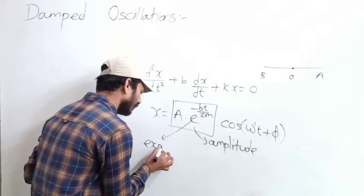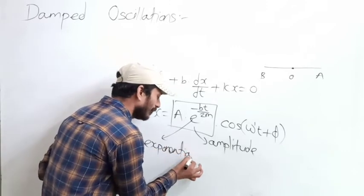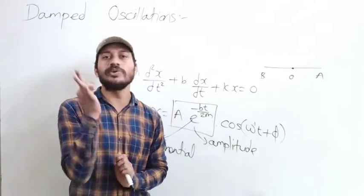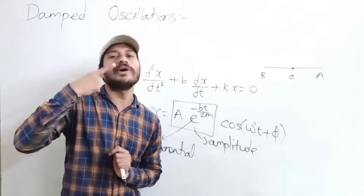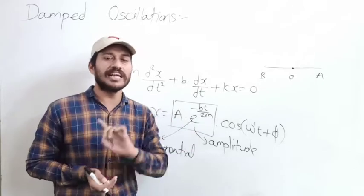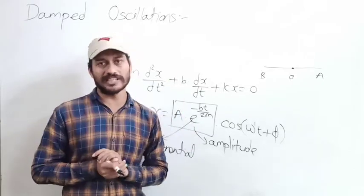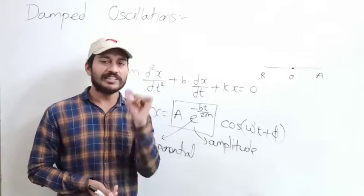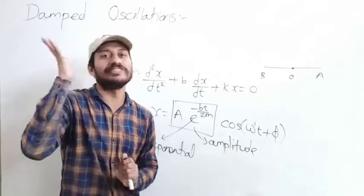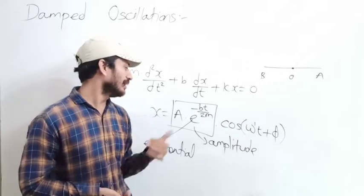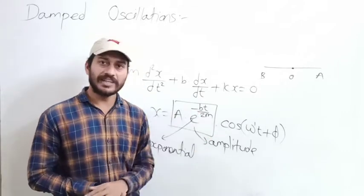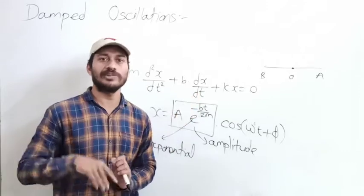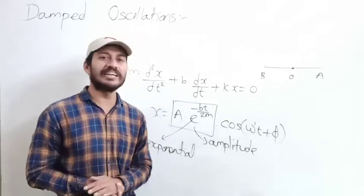What we have written here is exponential. When we look at the variable, E is a variable — an exponential variable. When we indicate a sudden change in the variable, it indicates a sudden change. The negative sign indicates a decrease. The amplitude is A into e raised to the power minus bt by 2m. This is the amplitude term. The negative sign in the exponent indicates decrease — as time goes on increasing, amplitude goes on decreasing.